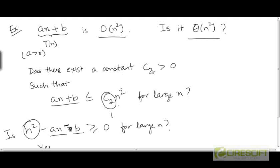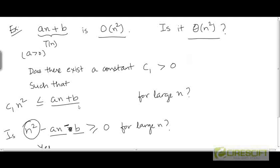Now, is an plus b θ(n²)? Another way to ask this is: does there exist a constant c₁ greater than 0 such that an plus b is bounded from below by c₁ times n²? So we're asking about the existence of a lower bound, because to prove that something is θ(n²), we need to show both an upper and a lower bound — that this function can be sandwiched between two constant multiples of n². We have shown the existence of the upper bound; now we are trying to see if there is a constant multiple of n² that can act as a lower bound for an plus b.